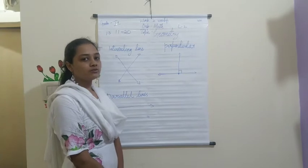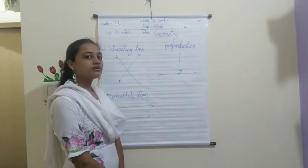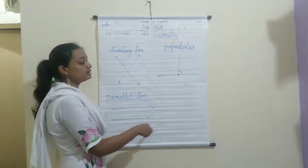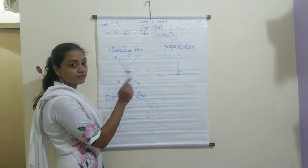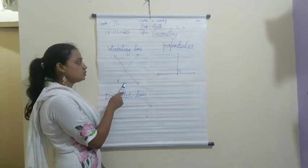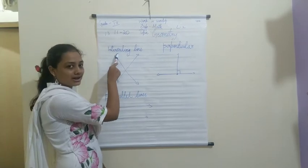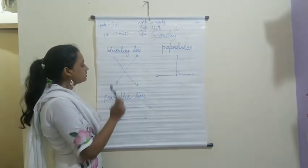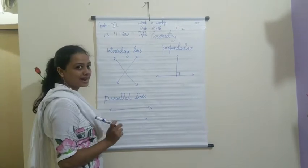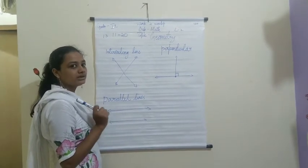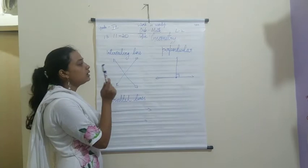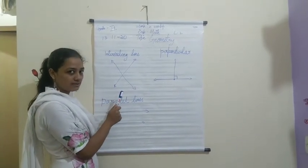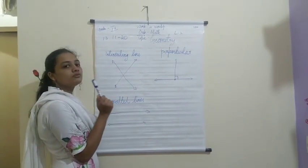Now let's go further and learn some more lines. I have drawn three types of lines: the first one is intersecting lines, the second one is perpendicular lines, and the third one is parallel lines. In this video, you will learn what these are, how to name them, and how to write the names.